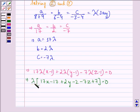Now, since λ is not equal to 0 - here we have taken λ to be some number that is not equal to 0 - therefore, 17x + 2y - 7z = 12.